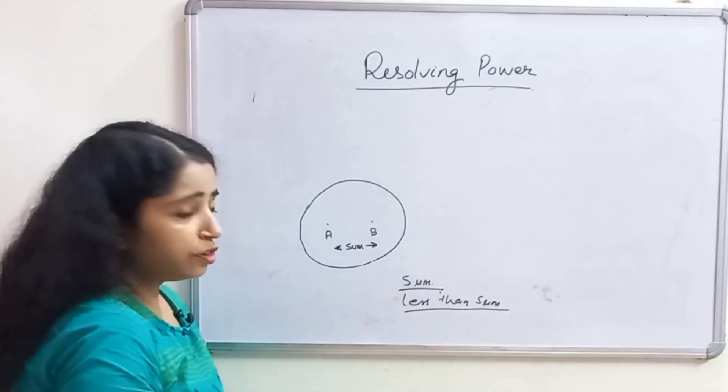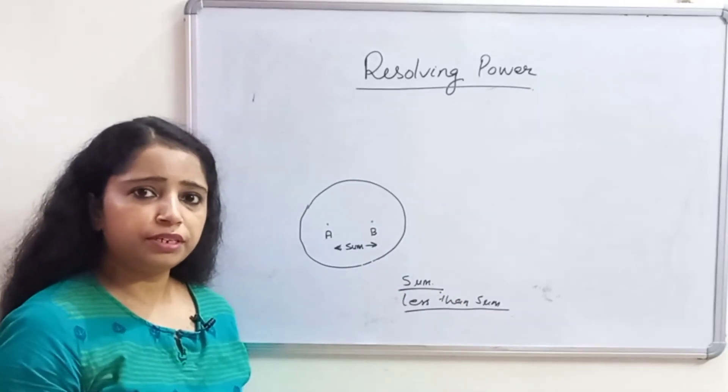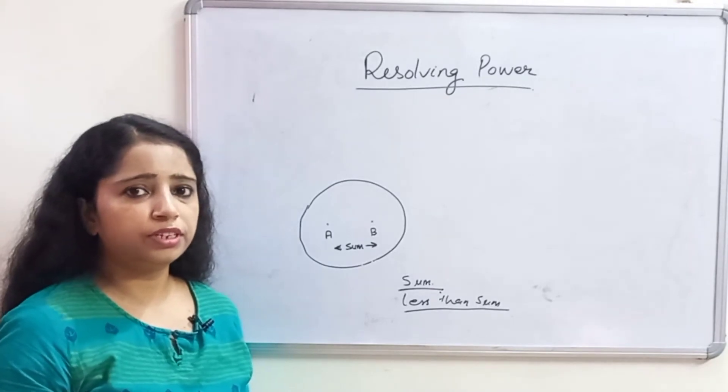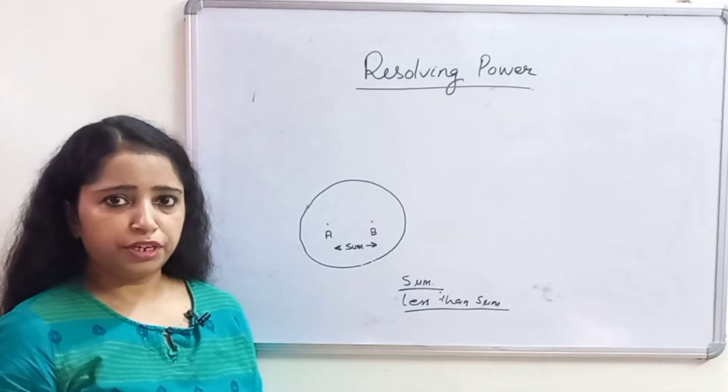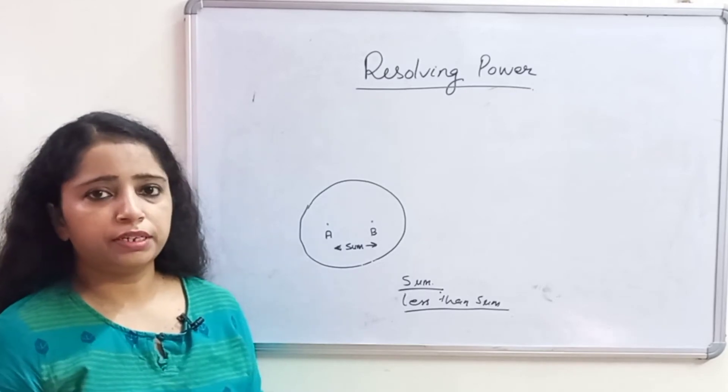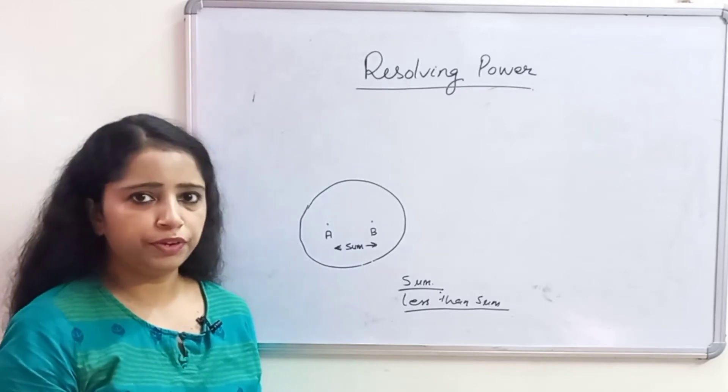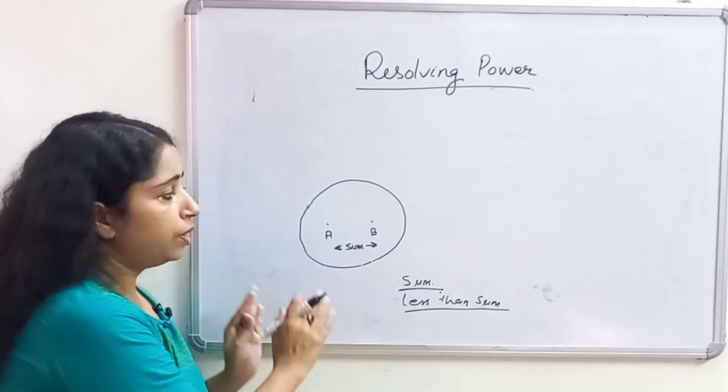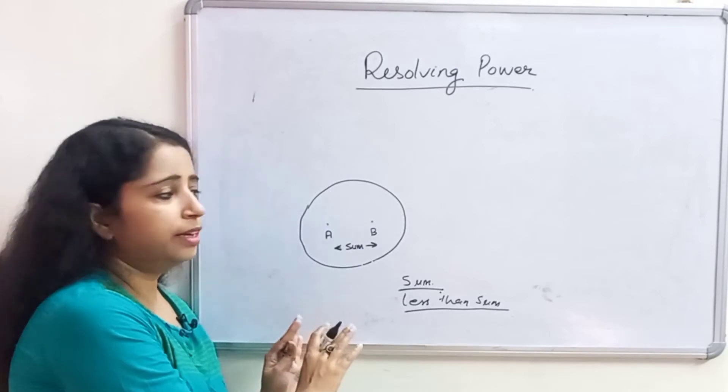Because limit of resolution is the minimum distance that should be present between two points that allows for their discrimination as two separate points like I told you in my last video. So, limit of resolution how it is related to resolving bar is clear.